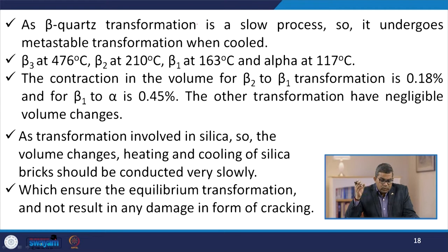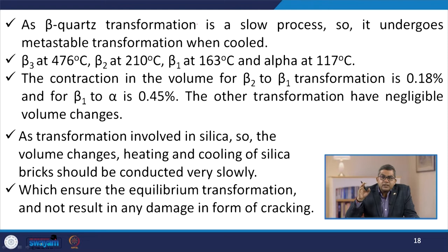On cooling, beta cristobalite transforms into tridimite at 1470°C. In the temperature range from 275 to 200°C, it transforms to alpha cristobalite, which is a metastable state. The transformation is accompanied by a 3.15% decrease in volume. The highest temperature form of tridimite is beta-4. As beta quartz transformation is a slow process, it undergoes metastable transformation when cooled — beta-3 at 476°C, beta-2 at 210°C, beta-1 at 163°C, and alpha at 117°C.